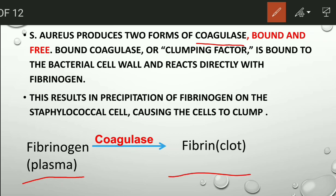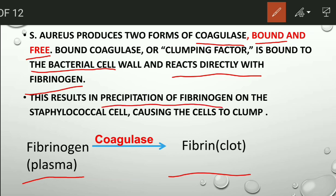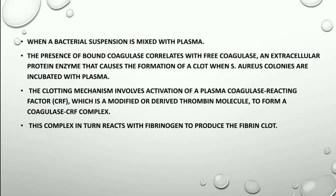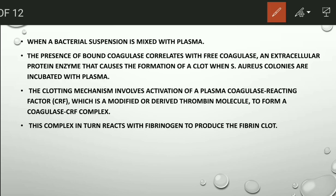Staphylococcus aureus produces two kinds of coagulase: bound and free. The bound coagulase is bound to the bacterial cell and can directly act upon fibrinogen, resulting in the precipitation of fibrinogen and causing the cells to clump.